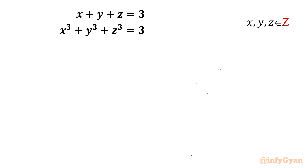Welcome back to Infigyan, my dear friends. In this video we are going to solve one very interesting and challenging Diophantine equation for integer solutions from Mathematical Olympiad. The equations are: equation 1 is x plus y plus z equal to 3, and equation 2 is x cube plus y cube plus z cube equal to 3.